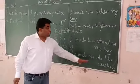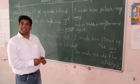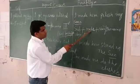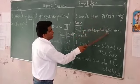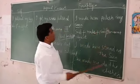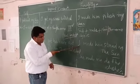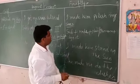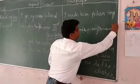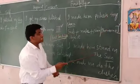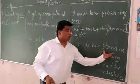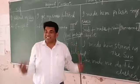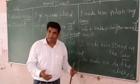The sentence structure for this pattern is: subject + 'made' + noun or pronoun (object) + first form of the verb. For example, in 'I made him stand in the sun' — 'him' is the object and 'stand' is the first form. It will always be the first form of the verb.